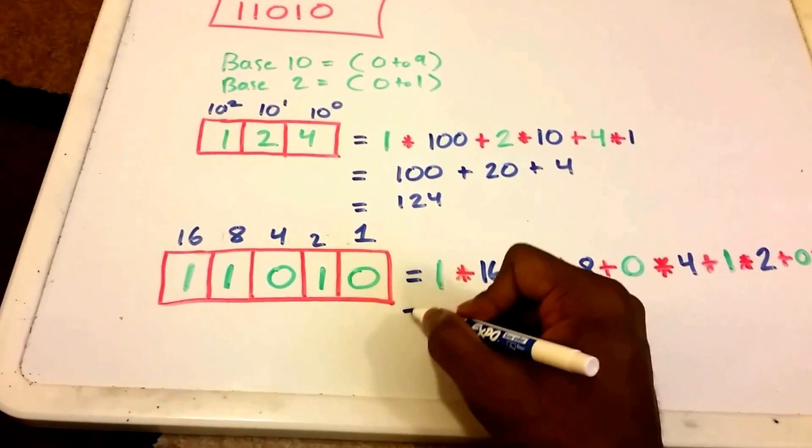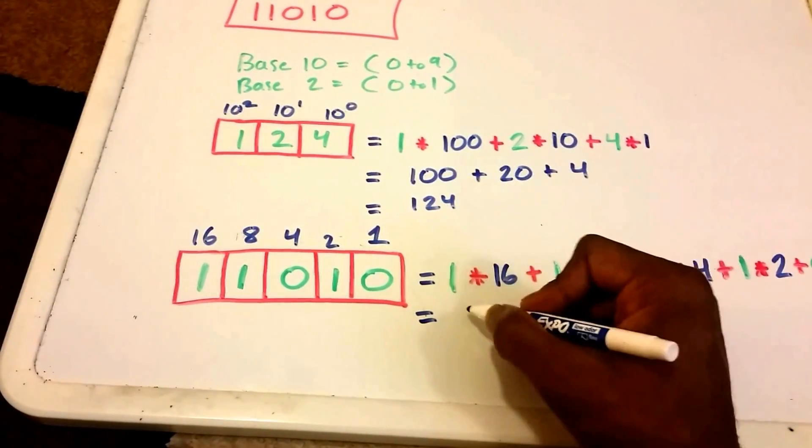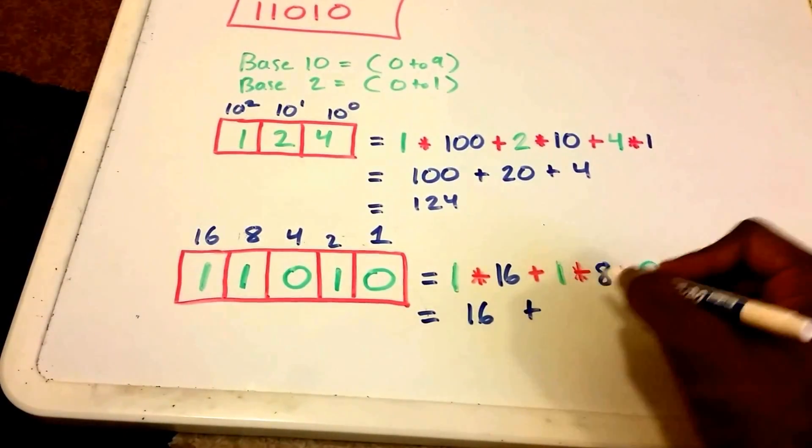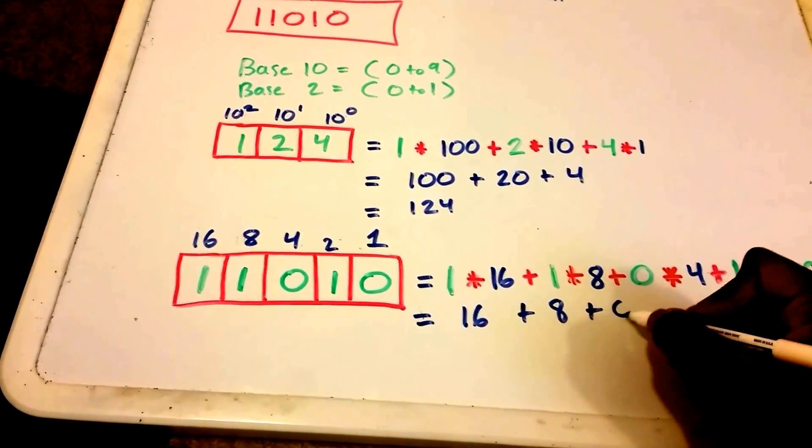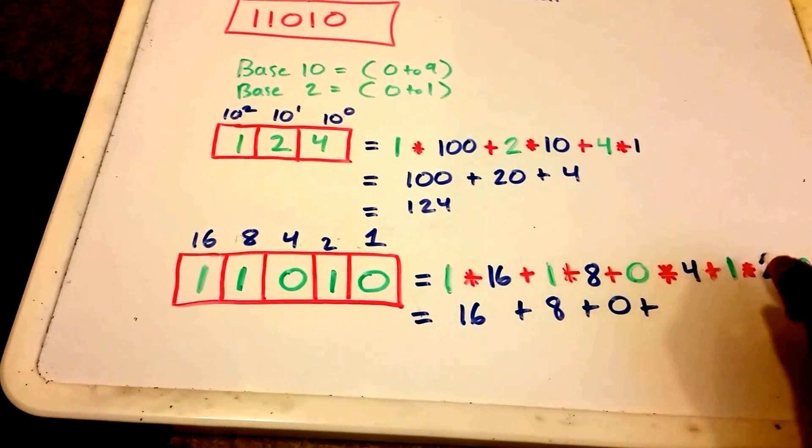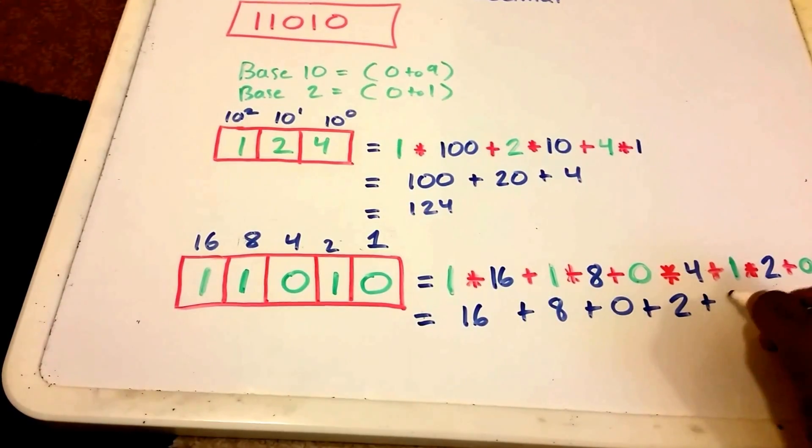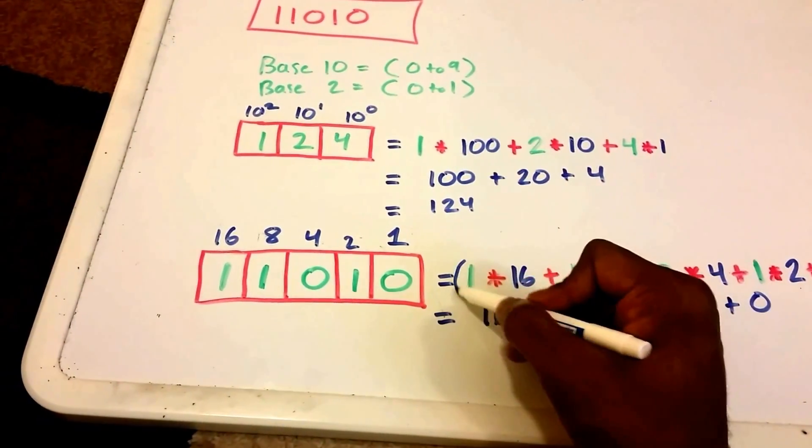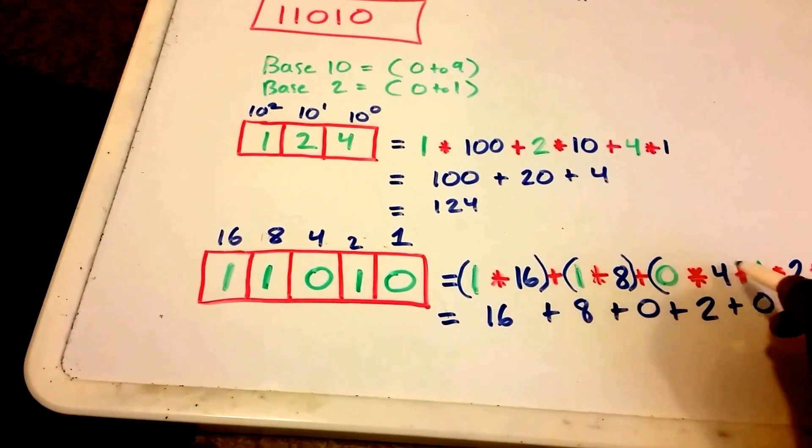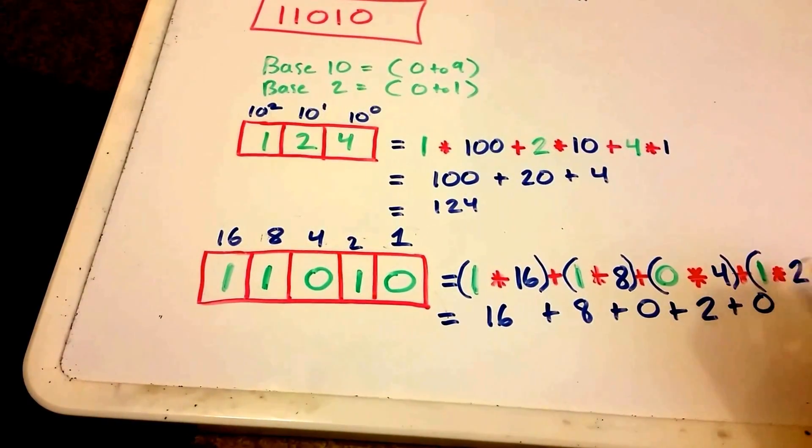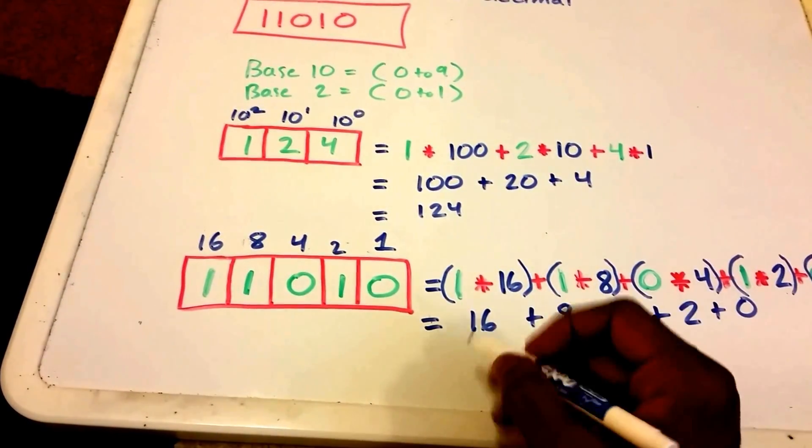All right, so let's now do some multiplication and some addition here. So 1 times 16 equals 16, 1 times 8 equals 8, 0 times 4 equals 0, 1 times 2 equals 2, and 0 times 1 equals 0. And of course, make sure that you have your parentheses here, the order of operations. So that's exactly what we did here.